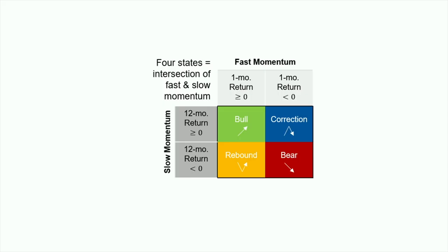So we start off in momentum turning points by creating four different regimes, and they're very intuitive. A bear regime is where the past month's return is negative and the past year's return is negative. A bull state is the opposite, with both of them being positive.